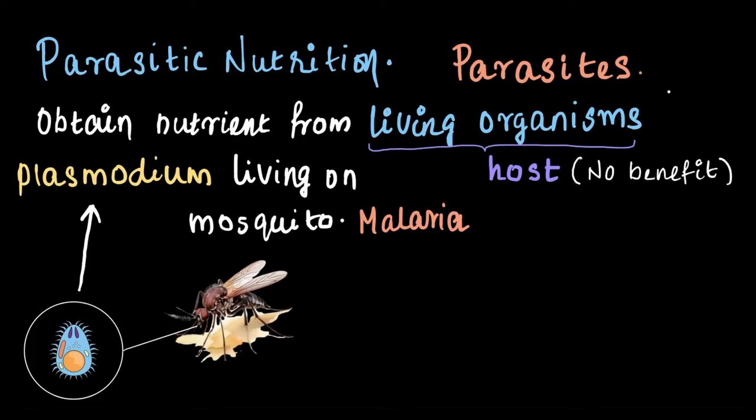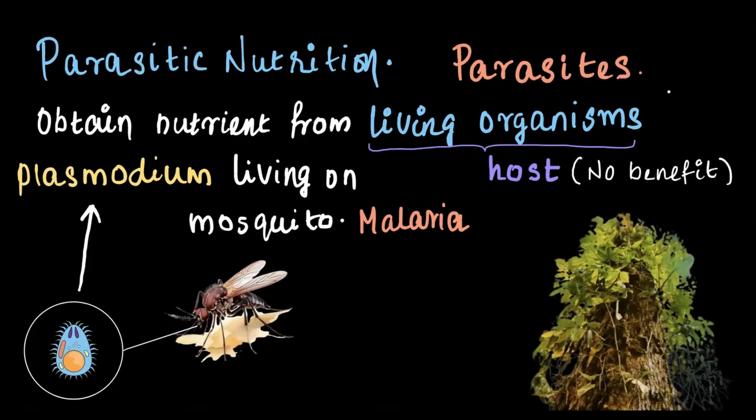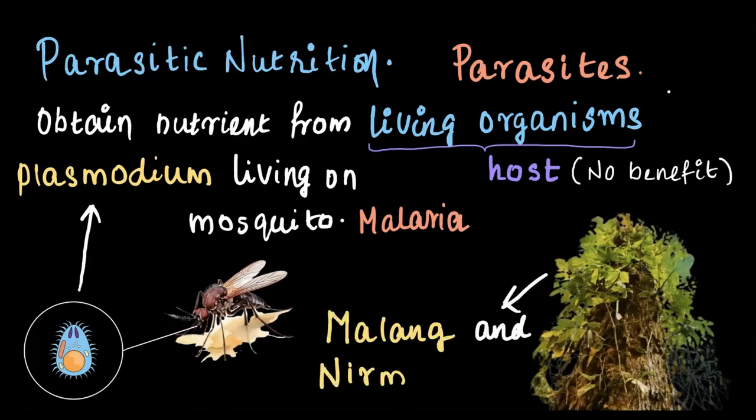Another example of a parasite found in the plant world is Malung and Nirmuli. They latch on to other plants, like a big tree, drawing water and nutrients directly from their host. Parasitic nutrition is a bit like scavenging, but at the expense of other living organisms.